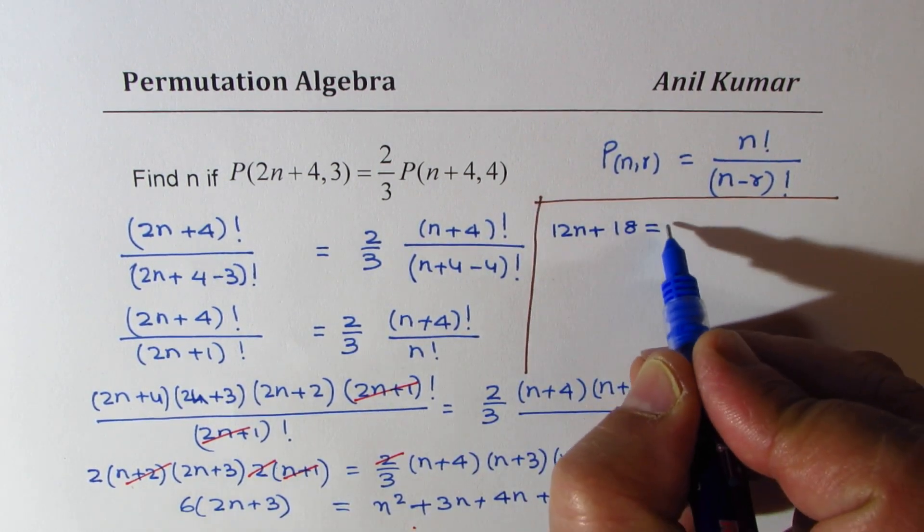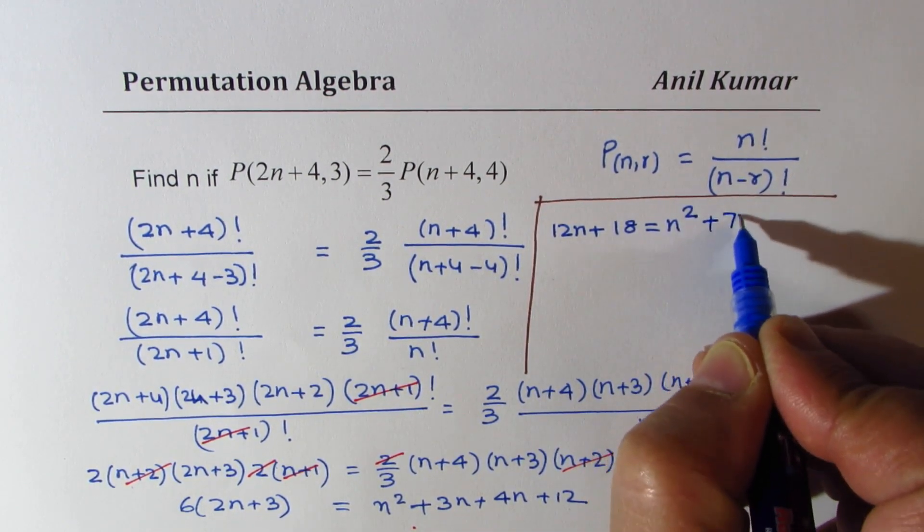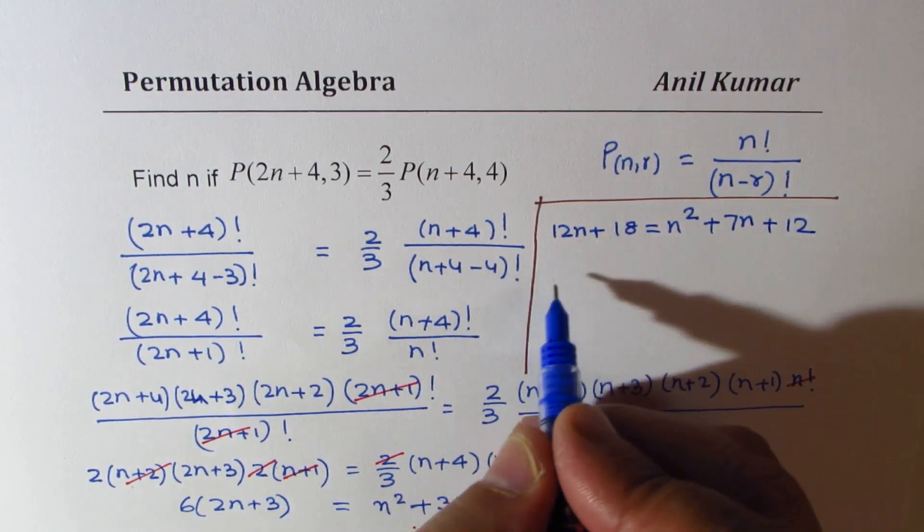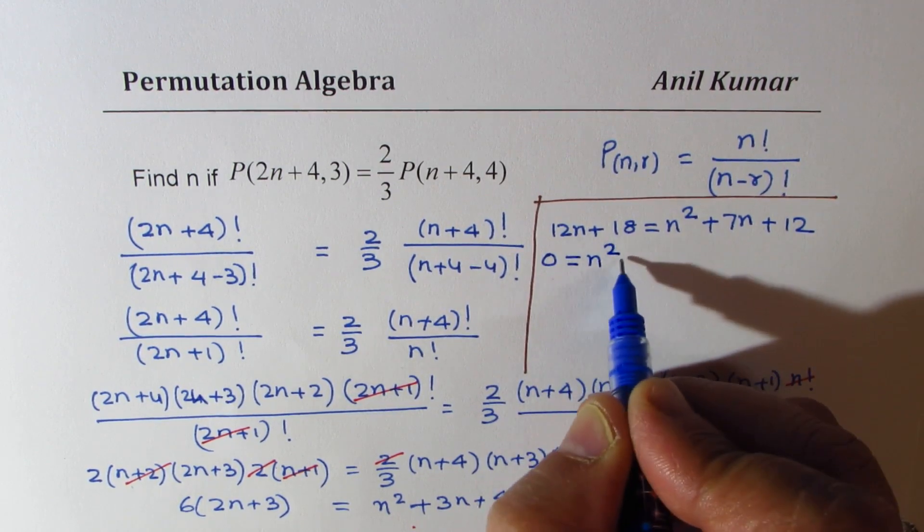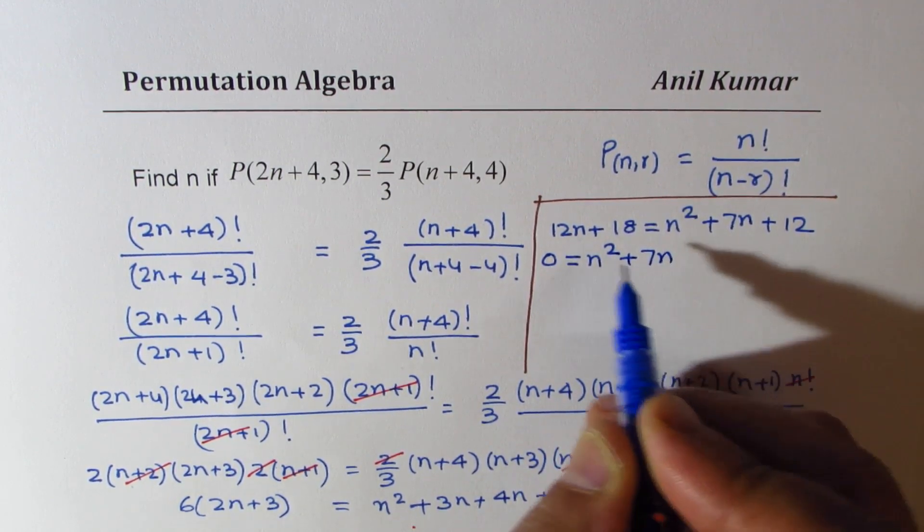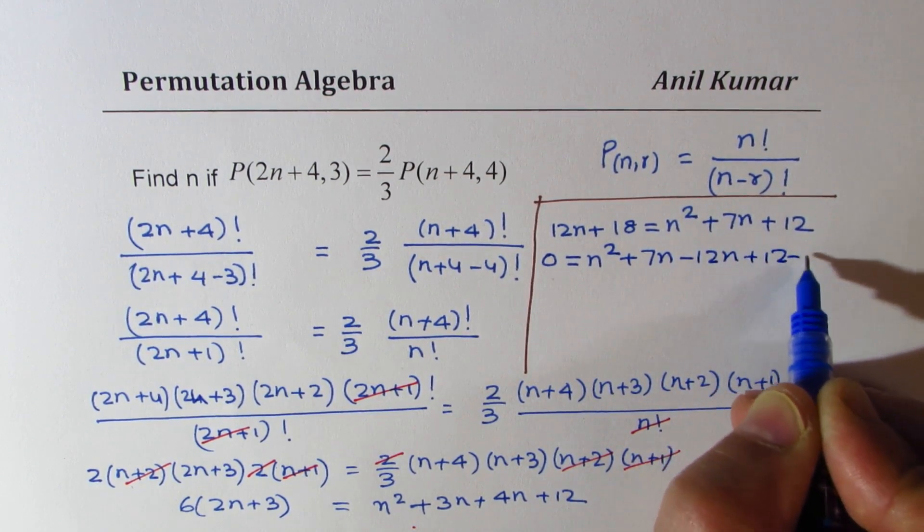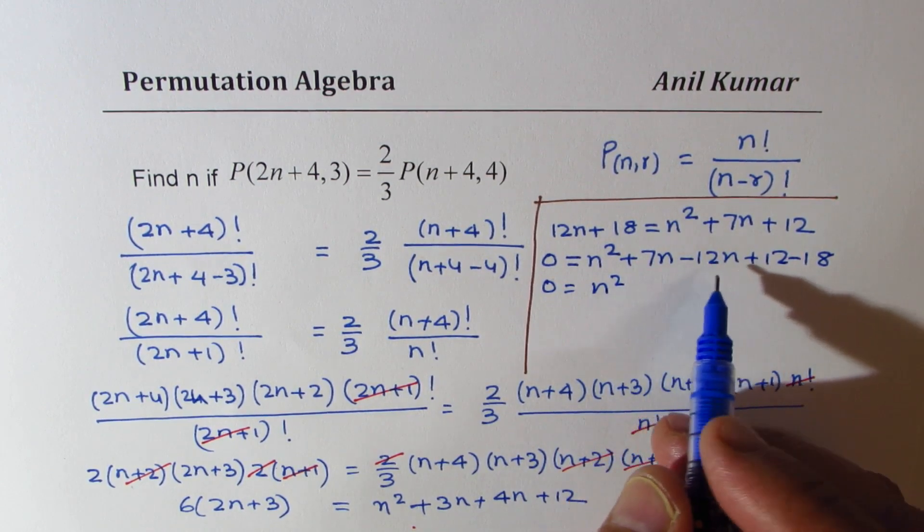Here we have n squared plus 7n plus 12. Bringing them all together, we can write this as 0 equals n squared plus 7n minus 12n plus 12 minus 18. So that gives us n squared minus 5n minus 6.